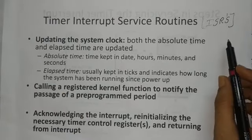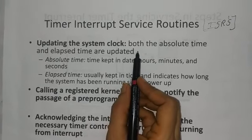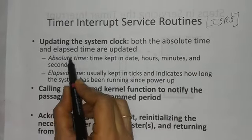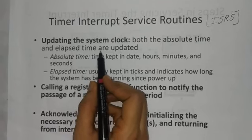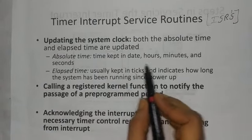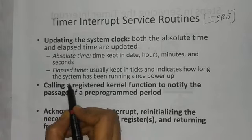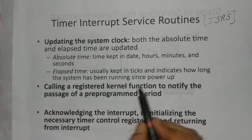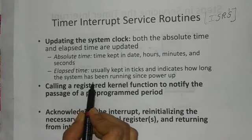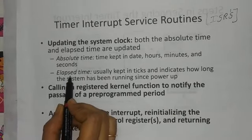These three steps are used for interrupt service routines. The first step is updating the system clock. Here we are using two types of timing mechanisms: absolute time and elapsed time. Absolute time is the time kept in date, hours, minutes and seconds — this is basic time. Elapsed time is usually kept in ticks and indicates how long the system has been running since power up. These are the two types of timing mechanisms set in the ISRs.